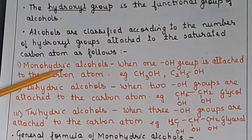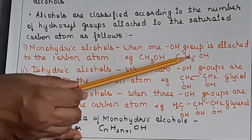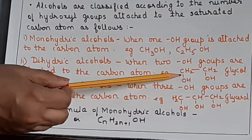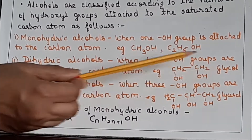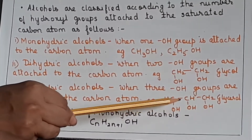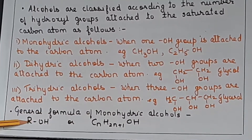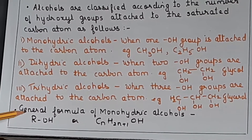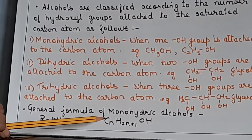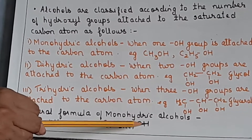Monohydric alcohol: when 1 OH group is attached to the carbon atom, like CH3OH (methyl alcohol) or ethyl alcohol. Dihydric alcohol: when 2 OH groups are attached — CH2OH-CH2OH — this is the formula of glycol. Trihydric alcohols have 3 OH groups: CH2OH, CHOH, and CH2OH — this is glycerol. The general formula of monohydric alcohols is ROH, where R stands for the alkyl group (one hydrogen less than the corresponding alkane), or written as CnH2n+1OH.